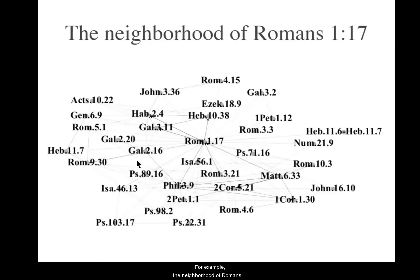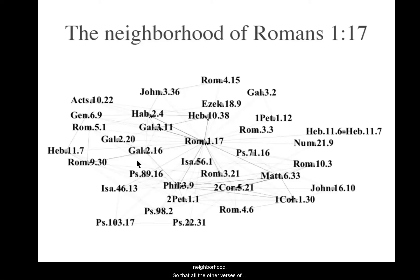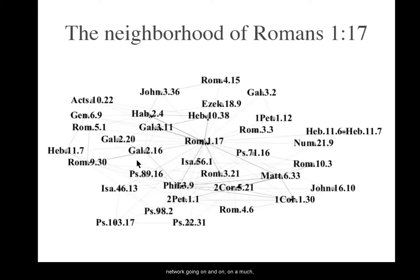This is, for example, the neighborhood of Romans 1:17. If you take Romans 1:17 and add all those links as I just described, you get this immediate neighborhood — all the other verses of the Bible that are within a distance of one from Romans 1:17. You should imagine this network going on and on on a much, much larger scale.